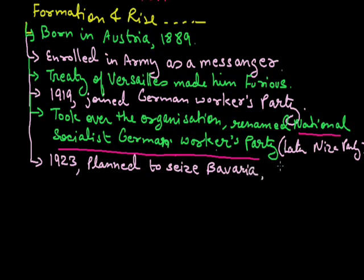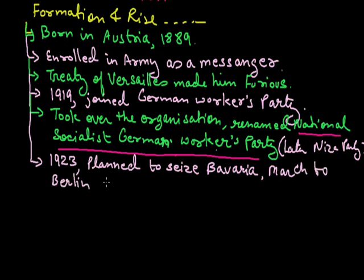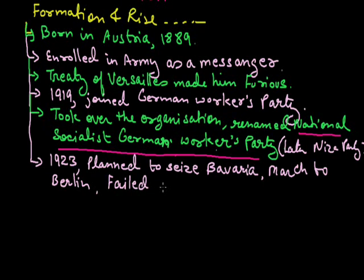In the year 1923, Hitler planned to seize Bavaria in the north of Berlin, and after this he started a march to Berlin city which was the capital at that time. But he failed in this attempt and was arrested and sent to jail.